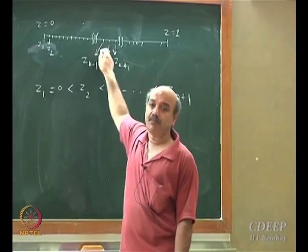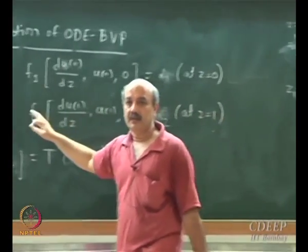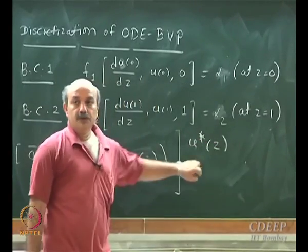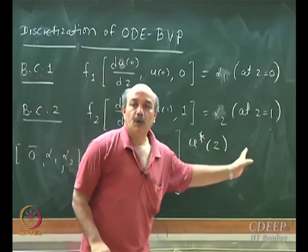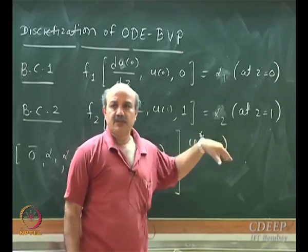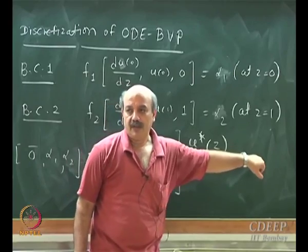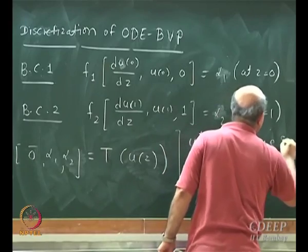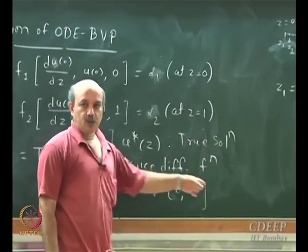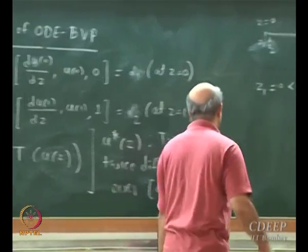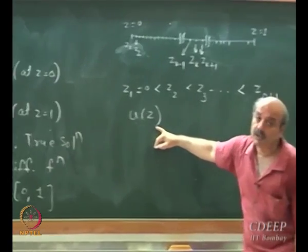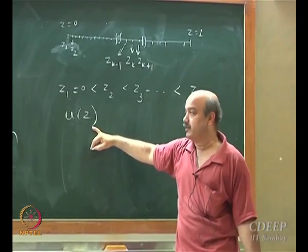The true solution u*(z) is a twice continuously differentiable function over [0,1] — it must be, otherwise it is not a solution of the differential equation. I am going to construct an approximate solution u(z), which will not equal u*(z). I want to approximate the first and second order derivatives of u(z). The approximate solution u(z) is going to be constructed numerically.